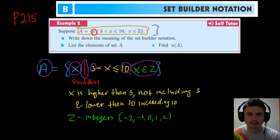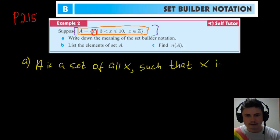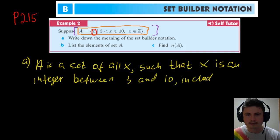Now you'll probably never have to say it out loud, but you do have to be able to read, analyze, and understand it. In this example, let's actually look at the questions: write down the meaning of set builder notation, list the elements of set A, and find n(A). Let's do this example together. Question (a): A is a set of all X such that X is an integer between 3 and 10 including 10. That's the answer to question (a).